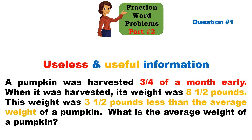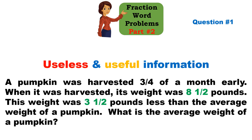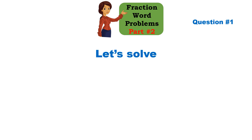Now that we've identified the useful and useless information, in order to solve this question we need to find the average weight of the pumpkin. The useful information tells us its weight was eight and a half pounds at harvest, and that weight was three and a half pounds less than the average. So if we add those two numbers together, we'll get the average weight. We'll break this into three parts.